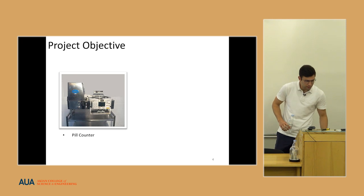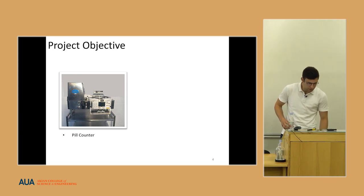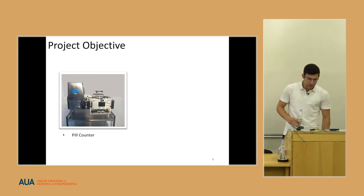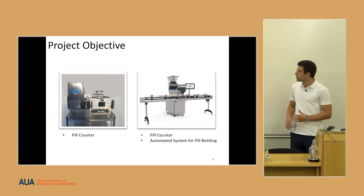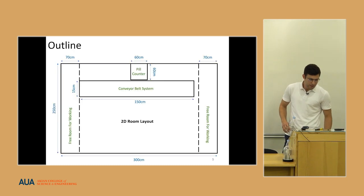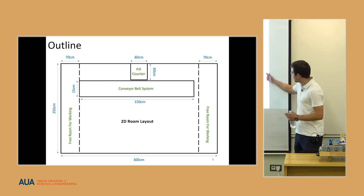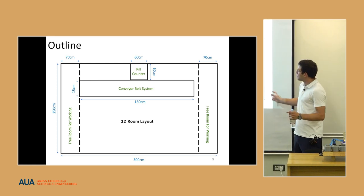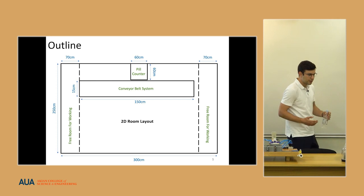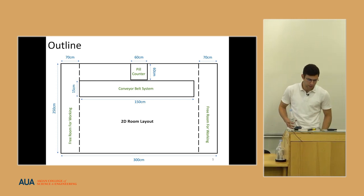After the discussions I could understand and see what's going on, and we wanted the pill counter with an automated system for pill bottling. I also had some requirements to give them free spaces on both sides of the conveyor so that the workers could do the beforehand work and after work after the bottling of the pills.